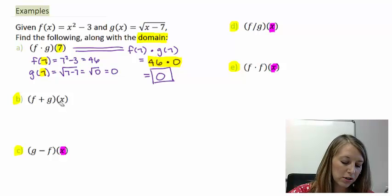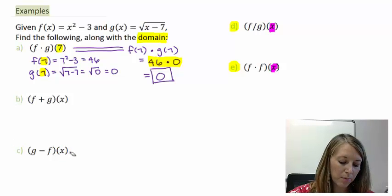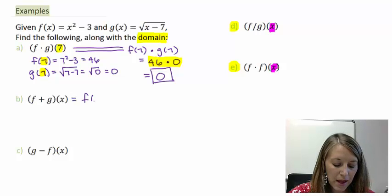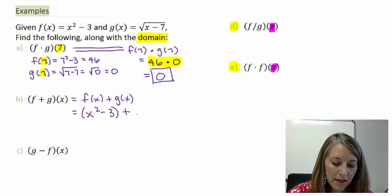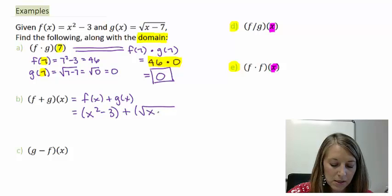So the first thing that we want to do in part b is f plus g of x. We know that that's the same thing as f of x plus g of x. So we just need to take our f of x function, which is x squared minus 3, and add it to our g of x function, which is square root of x minus 7.